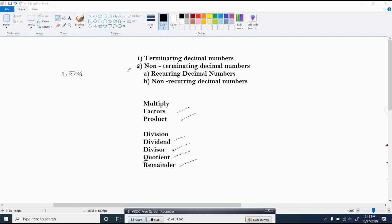While the second one is the non-terminating decimal numbers. Under non-terminating decimal numbers, there are two. The recurring decimal numbers, which is the repeated number. And the second one is the non-recurring decimal numbers. A non-recurring decimal numbers doesn't follow any pattern of the number.